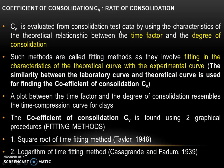CV is evaluated from consolidation test data by using the characteristics of the theoretical relationship between the time factor and the degree of consolidation. Such methods are called fitting methods, as they involve fitting the characteristics of the theoretical curve. The similarity between the laboratory curve and the theoretical curve is used for finding CV. The coefficient of consolidation CV is found using two graphical procedures: the first is the square root of time fitting method, and the second is the logarithm of time fitting method.